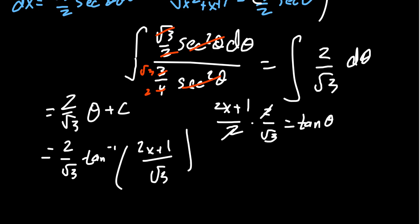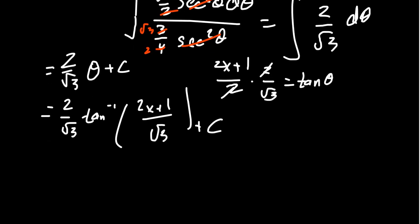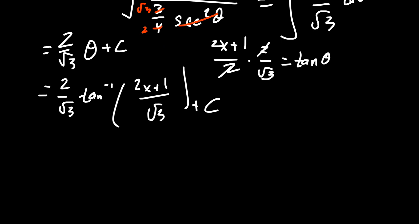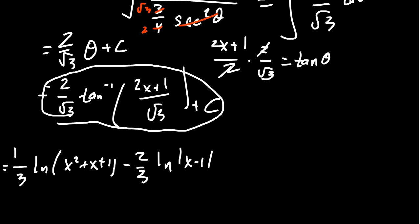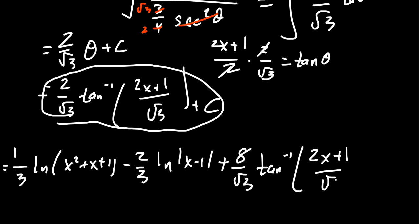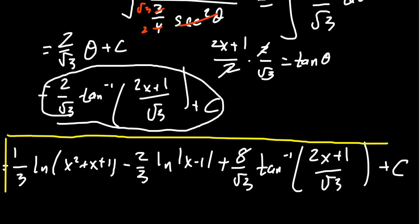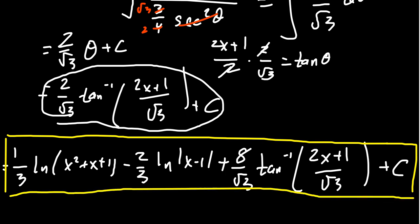Putting it all together, since there was a coefficient of 4 in front of that last integral, we get 2 times 4 = 8 over √3. The final answer is: -2/3 · ln|x - 1| + 1/3 · ln(x² + x + 1) + (8/√3) · arctan((2x + 1)/√3) + C. That one was quite insidious as I said — having that irreducible quadratic requires us to do a trigonometric substitution, which complicates what was already a very difficult exercise.